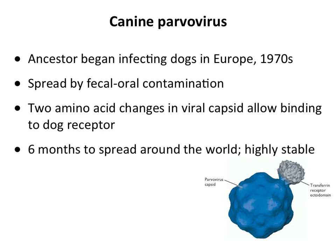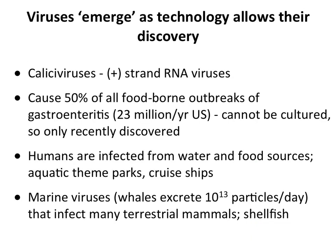We were able to reconstruct almost the entire history of canine parvovirus because banked sera from the 1970s were available — the precursor virus was already circulating in dogs by 1970. This is an important point: technology also allows us to discover viruses that have actually been around for a long time. For example, caliciviruses — small positive-strand RNA viruses — cause about half of all foodborne outbreaks of gastroenteritis, with 23 million cases per year. They couldn't be cultured in laboratory cells, so we couldn't discover them earlier; when we developed techniques to identify them, we began to detect them. These are acquired from contaminated food and water.